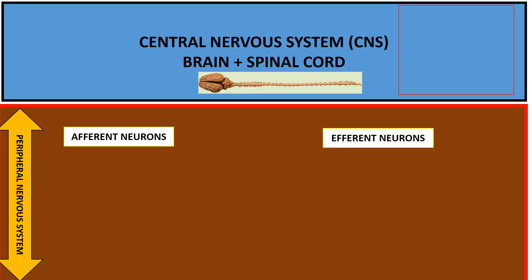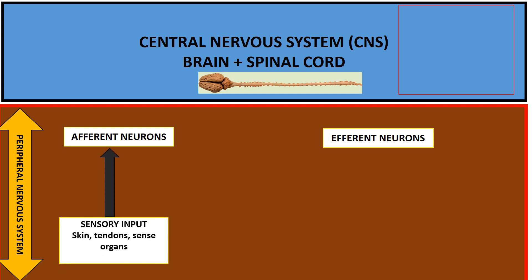The afferent neurons are the sensory neurons that receive sensory input from different parts of the animal body — both from the external environment, for example through the skin, or from the internal environment, for example stimuli within the gastrointestinal tract. These afferent neurons take this information to the brain, or the information can get to the brain via the spinal cord.